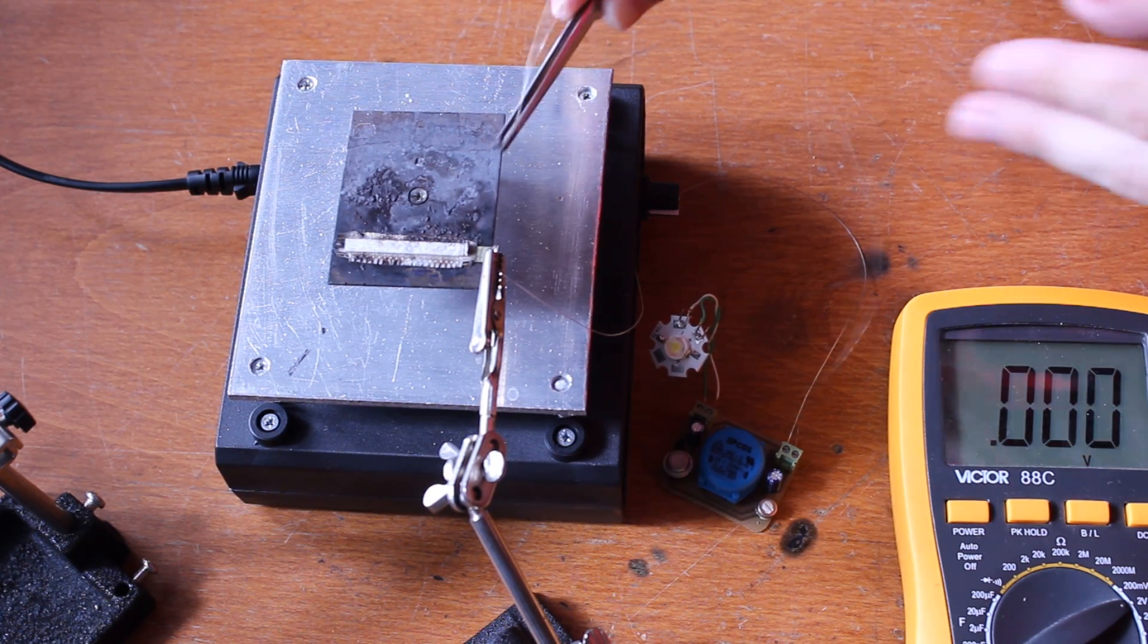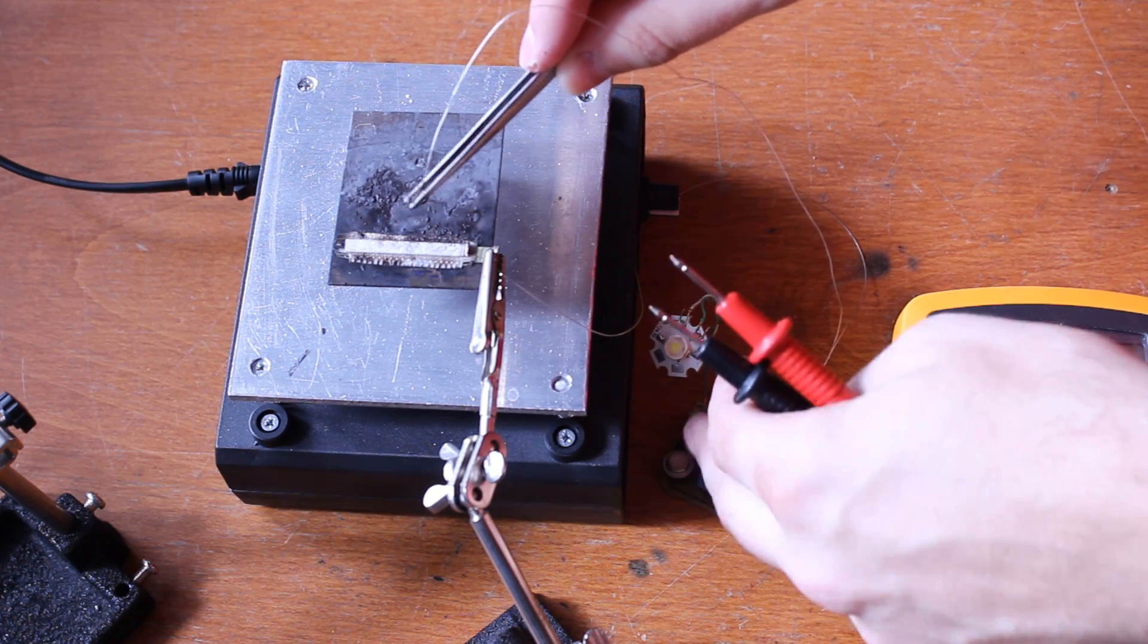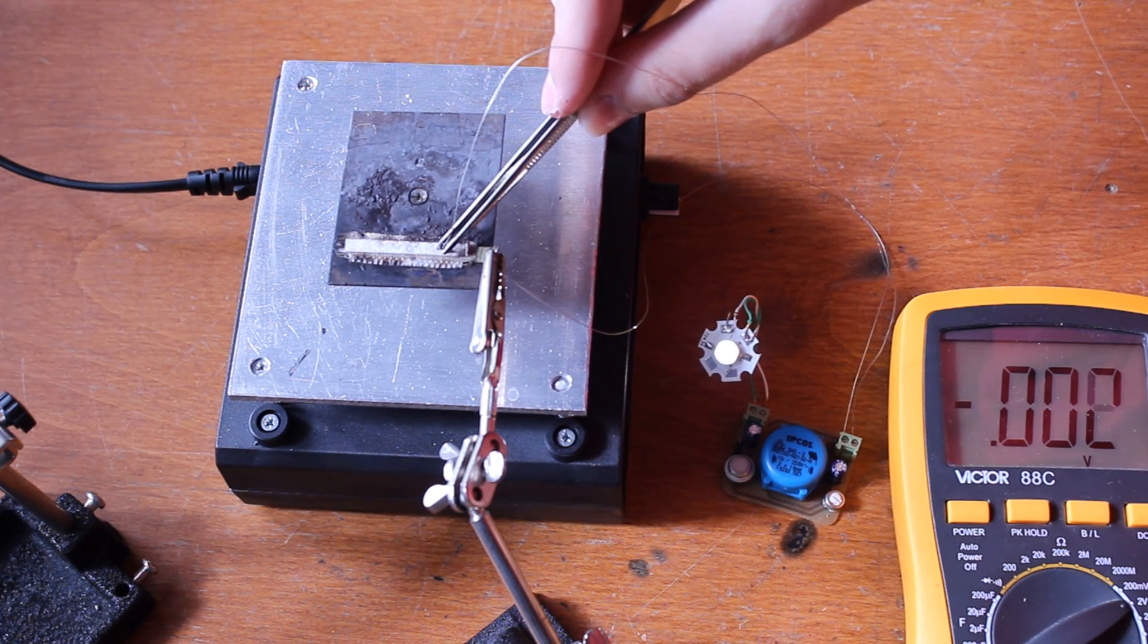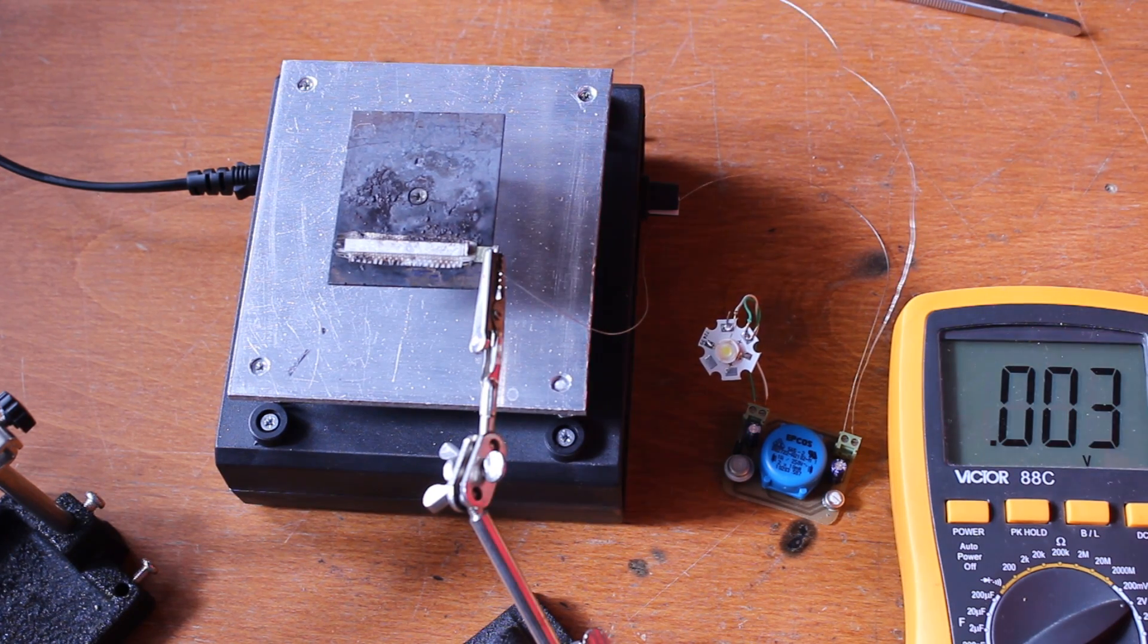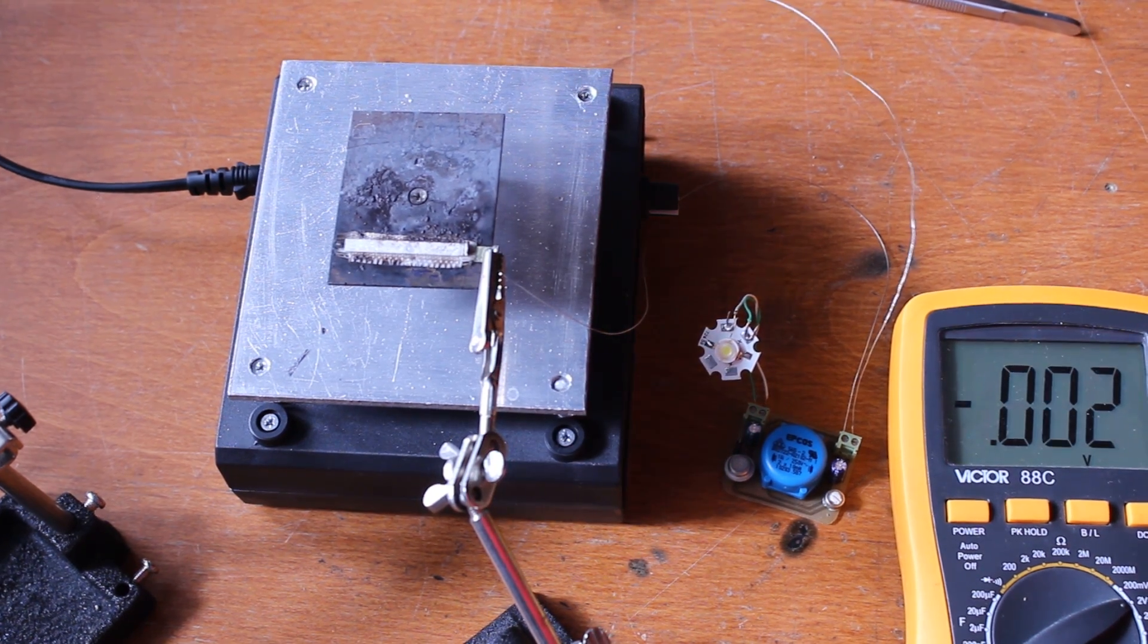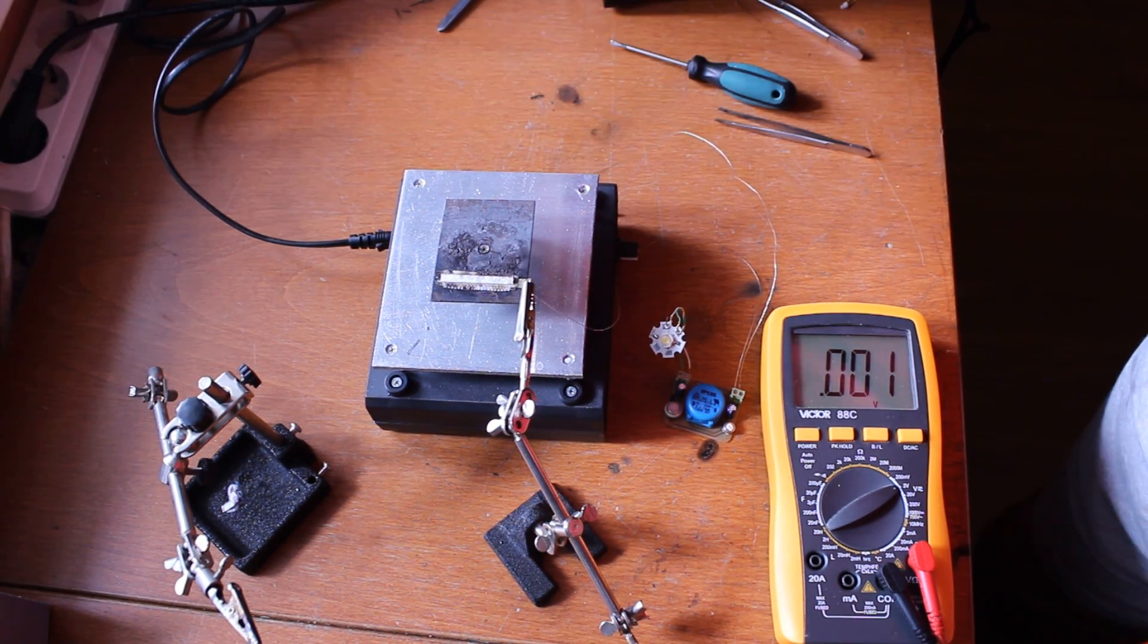So that was the molten salt battery, a military technology that is slowly creeping into the consumer market. There certainly are better chemistries and better techniques of making these kind of cells, but the way I did it is something you can do at home. Well, that's it. Thanks everyone for watching!